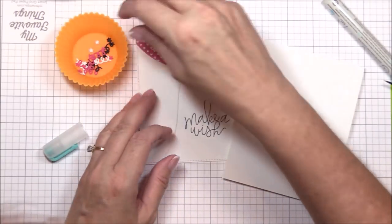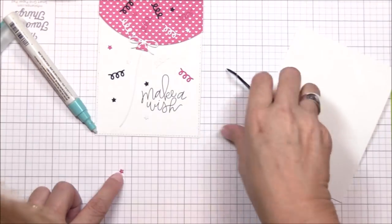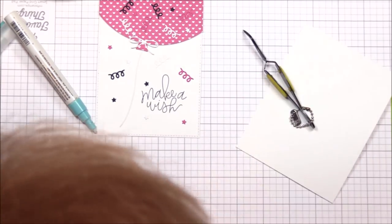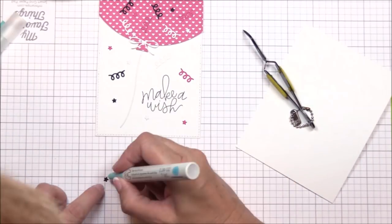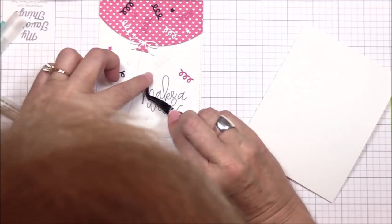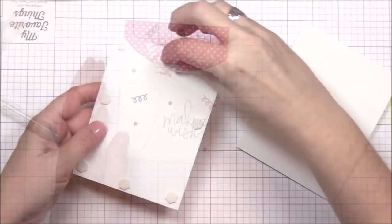Next I die cut some confetti from smooth white black licorice and ripe raspberry cardstock using the confetti dies from the balloon shaker window and frame die-namics. I'm adhering some of the confetti to the front of the card with a glue pen. And yes it's tedious but again I truly think these small details make a world of difference in your finished project.